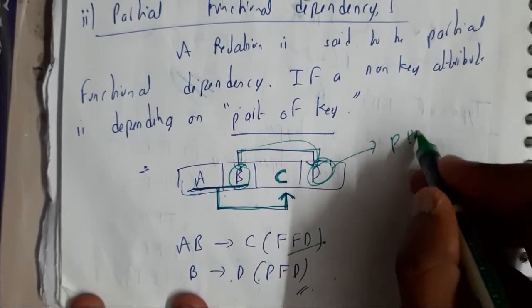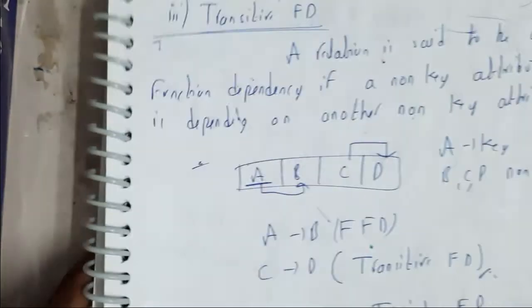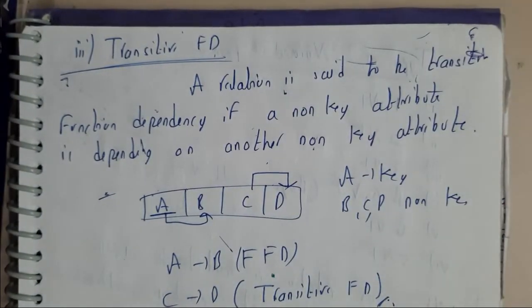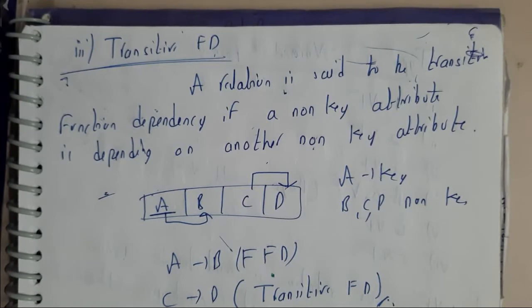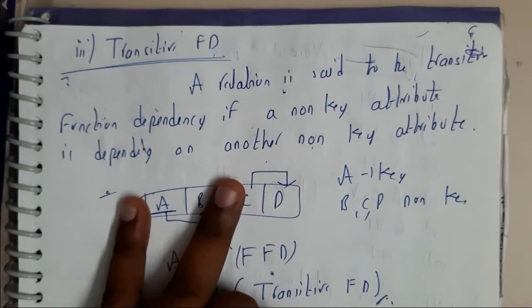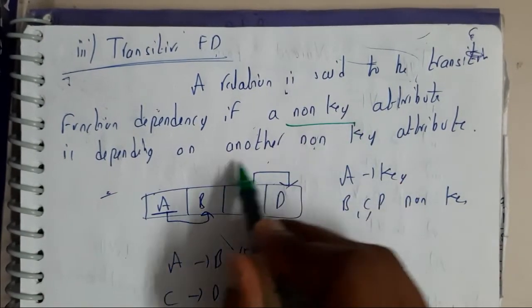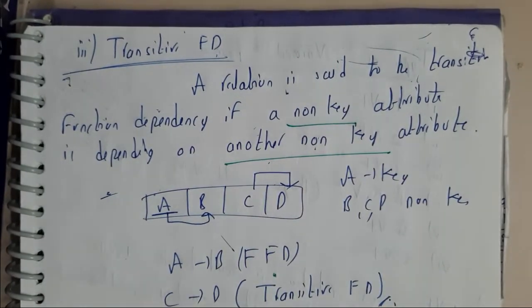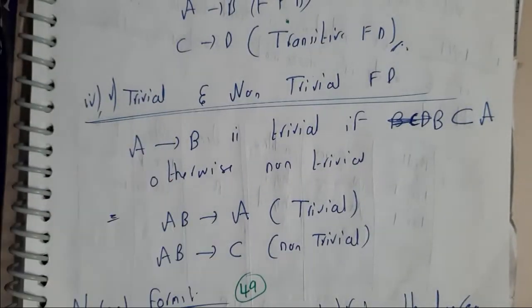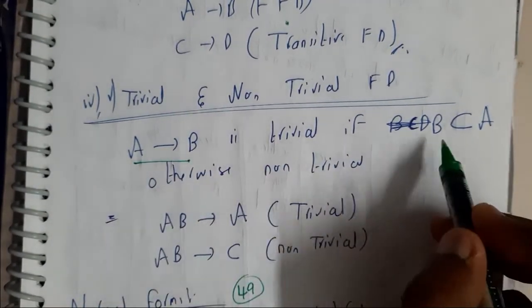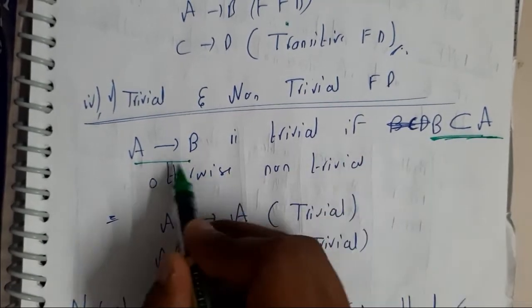Transitive functional dependency is nothing but a non-key depending on non-key. Whereas trivial is nothing but if A → B and B is the subset of A, then it is trivial. Else it is non-trivial.